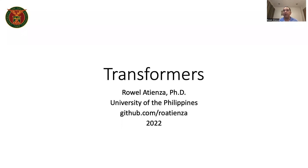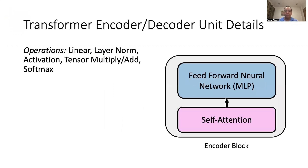We discuss a very important neural network architecture called transformers. Most recent state-of-the-art high-performing models are based on transformer models. Our goal is to understand the basic building blocks of transformers. Underneath, a transformer is made of encoder and decoder blocks, and each block is roughly the same in design.